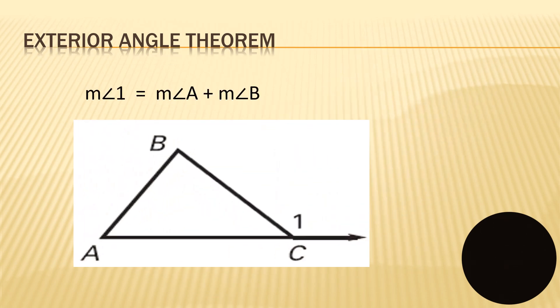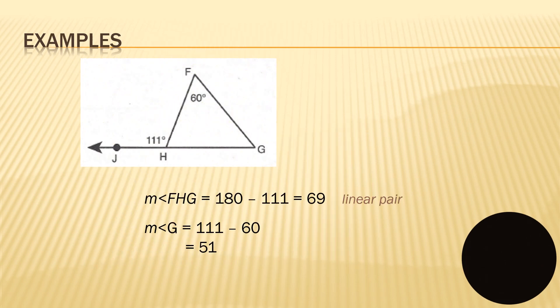measure angle one plus measure angle two equals measure angle four. In other words, we have here, if we are going to get the measure of angle one, so that is the measure of angle A plus the measure of angle B. For example, we have here measure angle F, so this one, F, H, G, is equals to 180 minus 111. So 180 because these two are linear pair. So that is 69 degrees. That means this is 69.